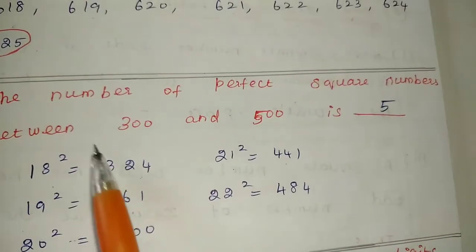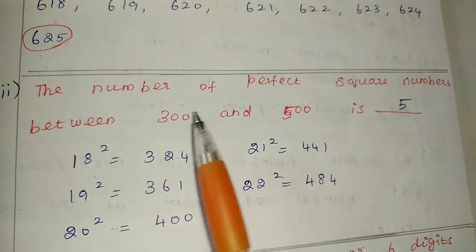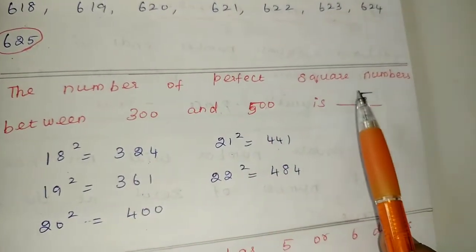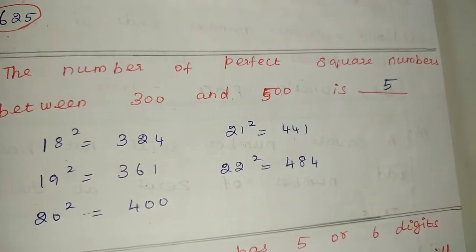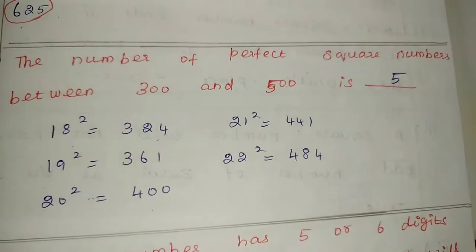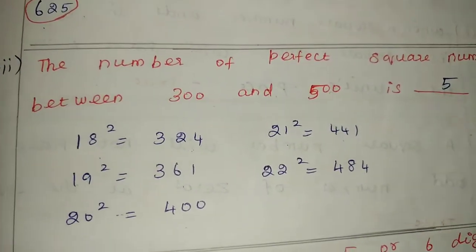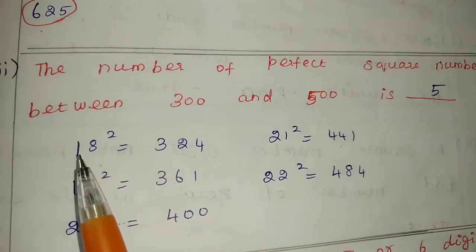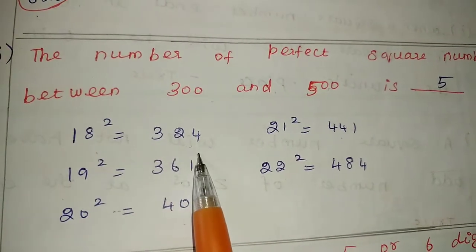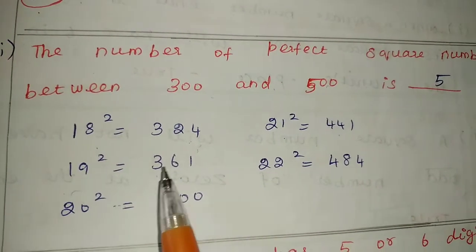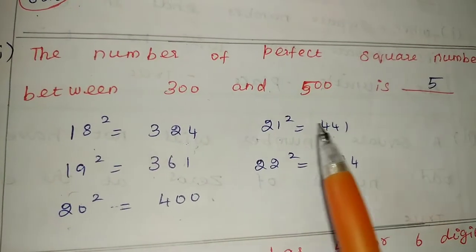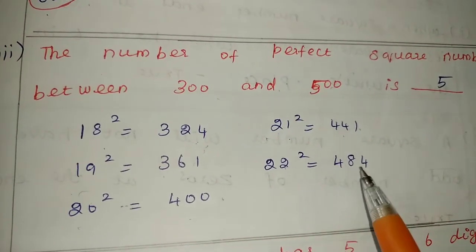Third one: the number of perfect square numbers between 300 and 500 is dash. We need to find the perfect squares between 300 and 500. 18² gives 324, 19² gives 361, 20² gives 400, 21² gives 441, 22² gives 484.